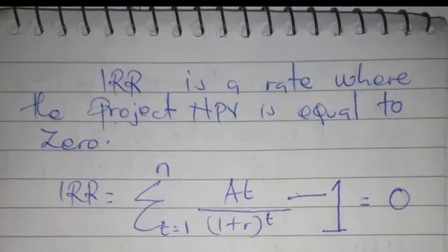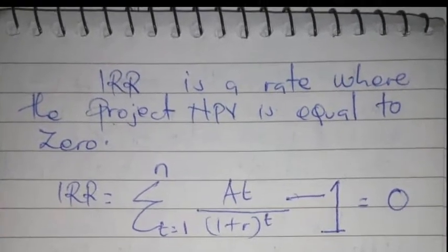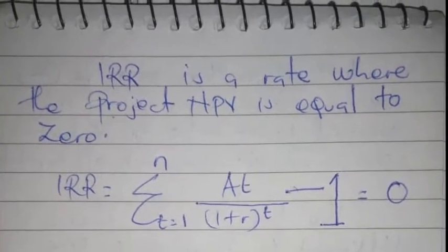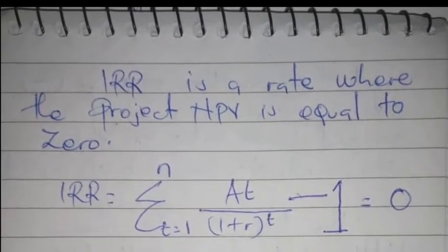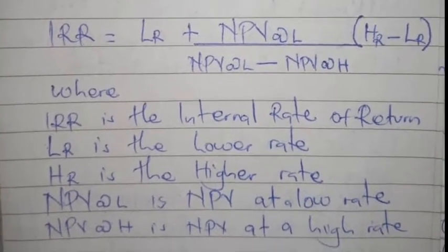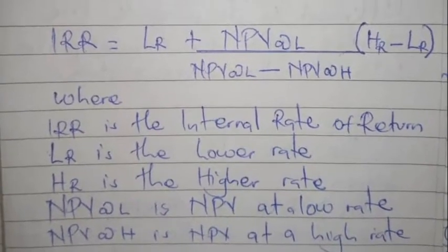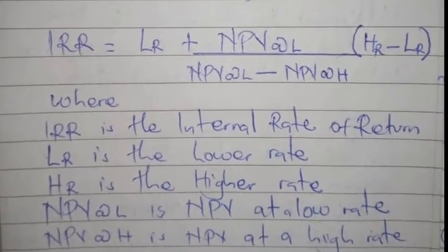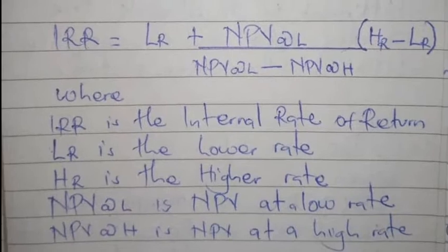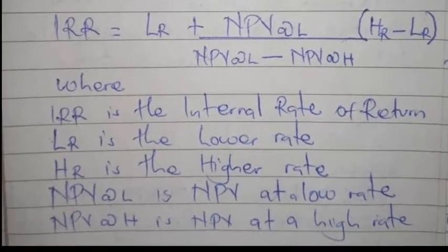From our previous video, the formula for NPV was: summation of cash flows minus the initial outlay equals zero. In order to get the IRR of the project, we use this formula: IRR = LR + [NPV at L / (NPV at L − NPV at H)] × (HR − LR), where IRR is the internal rate of return, LR is the lower rate, HR is the higher rate, NPV at L is the NPV at the low rate, and NPV at H is the NPV at the high rate.